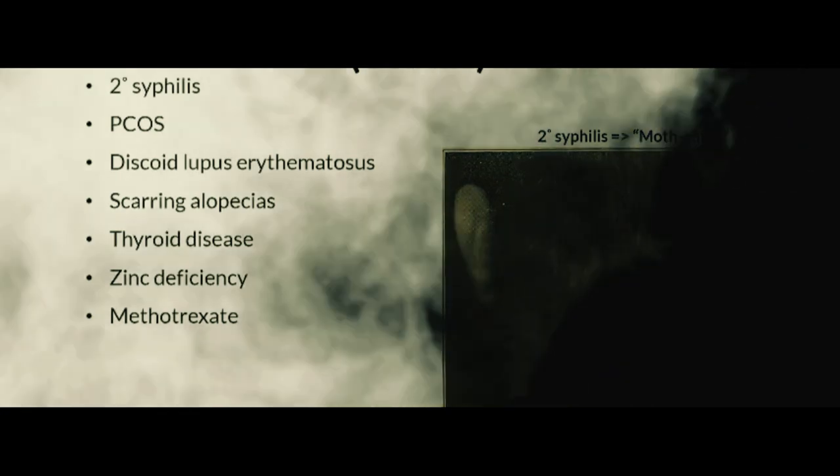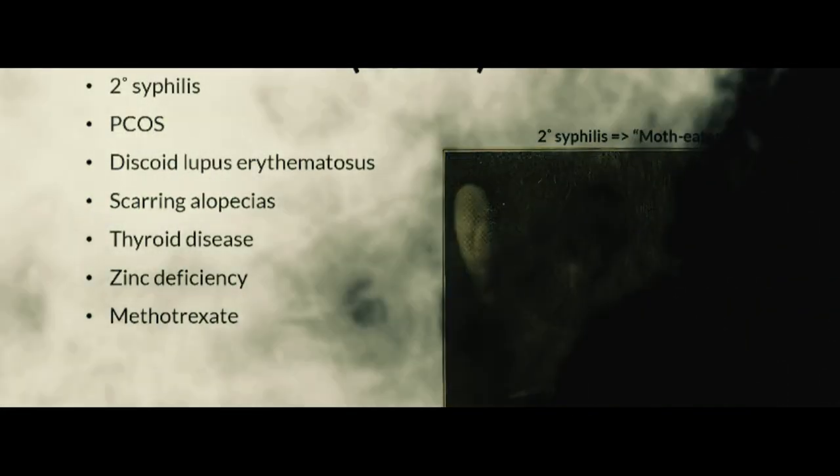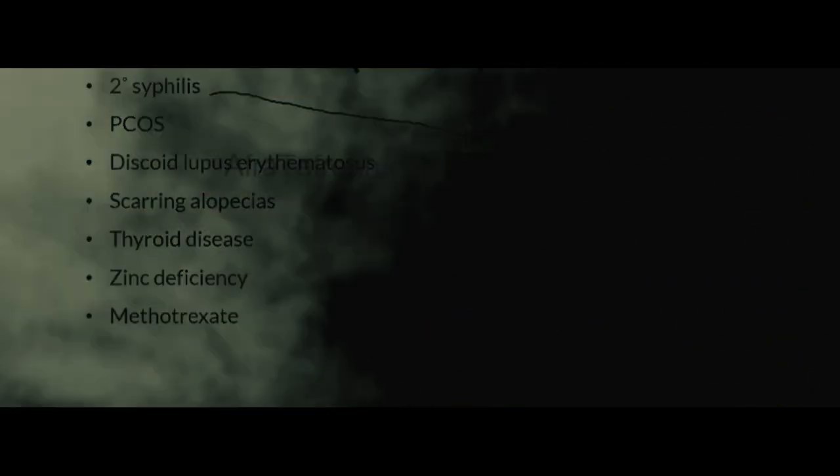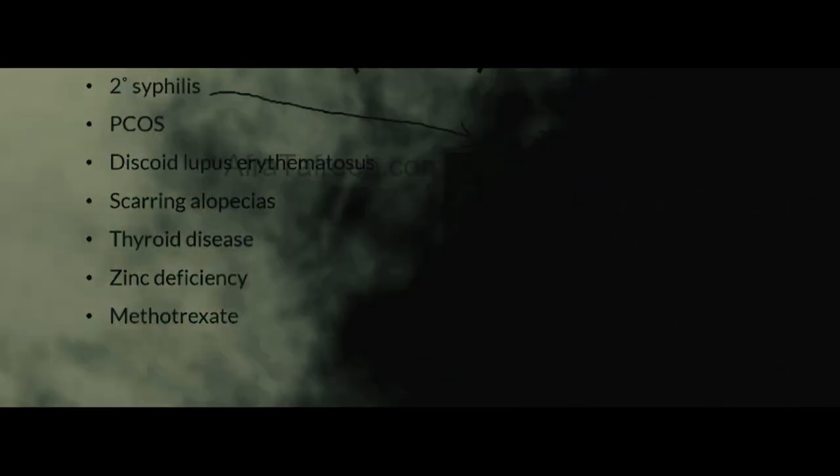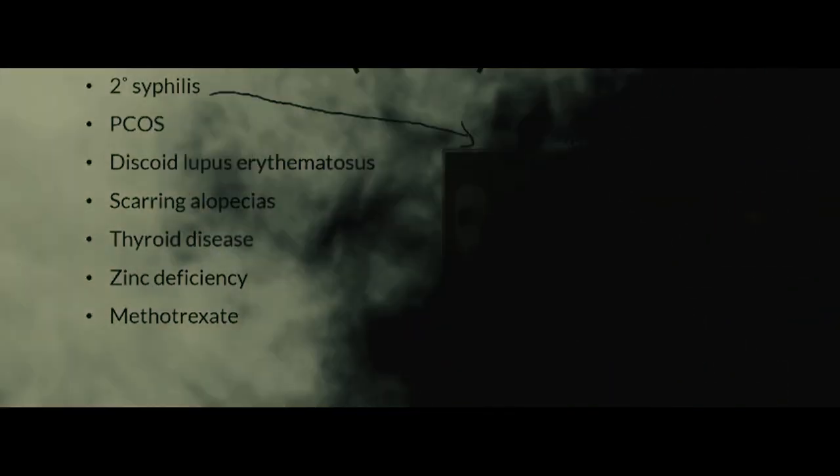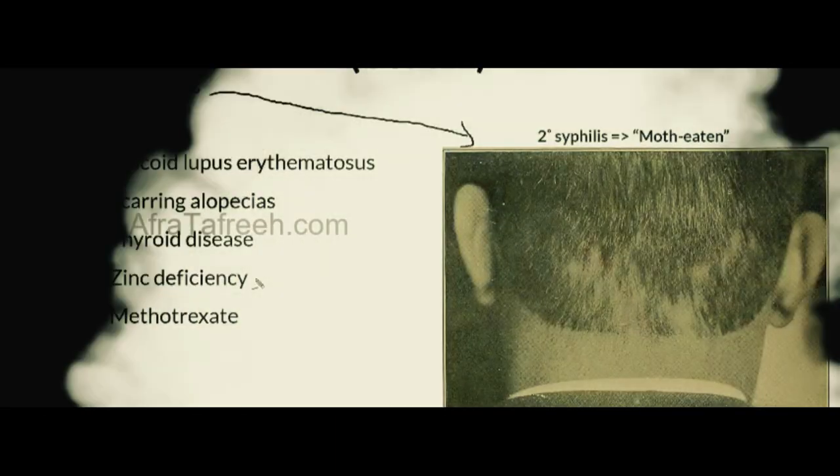There are several other conditions which can cause alopecia. Other causes include secondary syphilis, which classically presents with a moth-eaten appearance; polycystic ovarian syndrome (PCOS); discoid lupus erythematosus; various scarring alopecias; thyroid disease including both hyper- and hypothyroidism; zinc deficiency and other mineral and vitamin deficiencies; as well as methotrexate and many other chemotherapeutic agents, which interfere with the cell cycle and rapid cell division and hair growth.